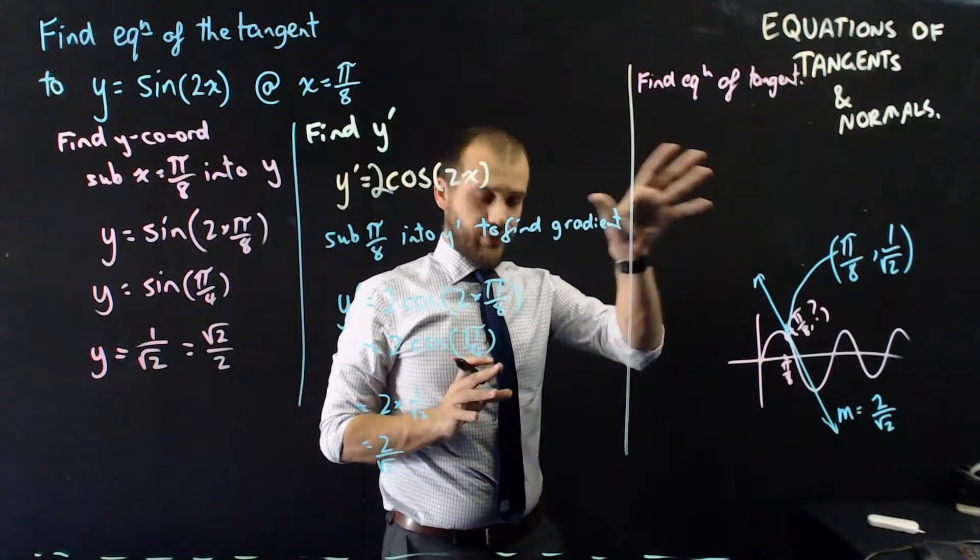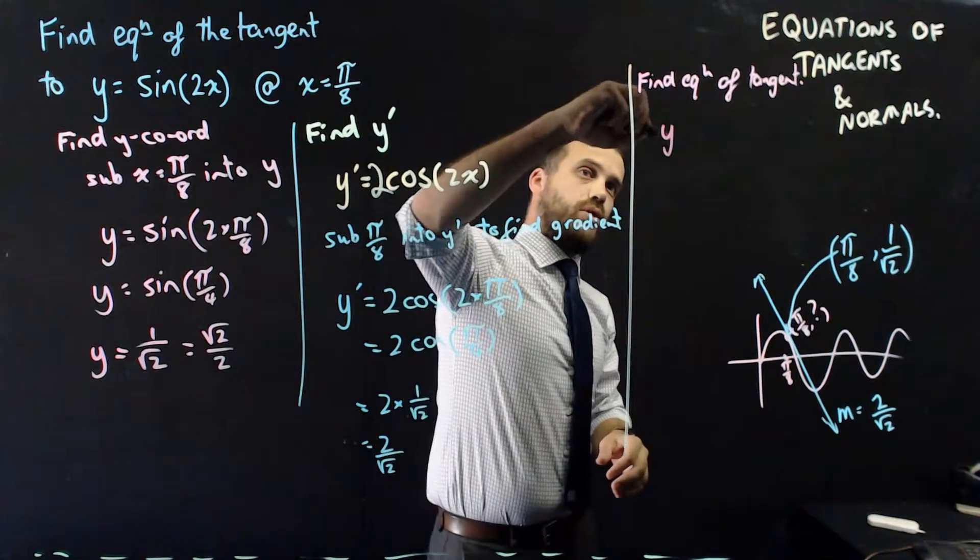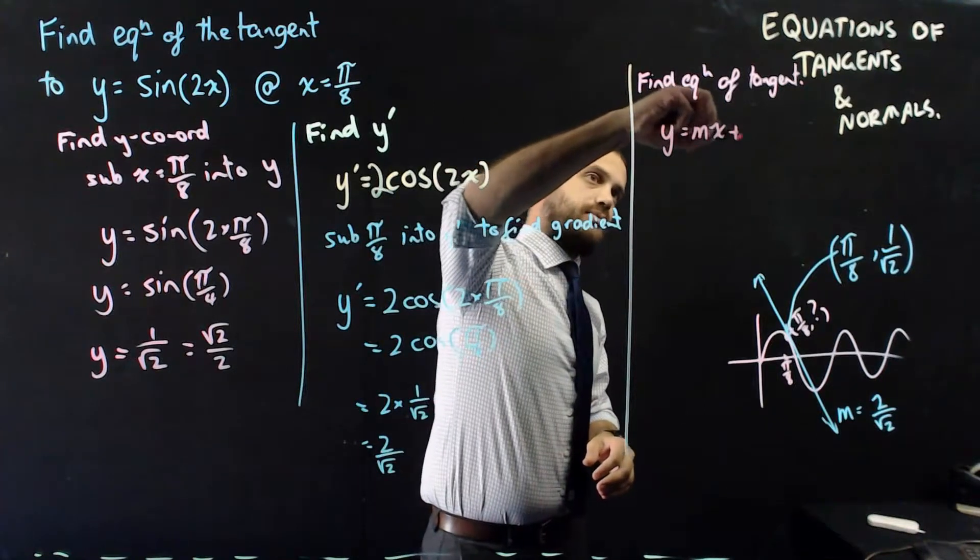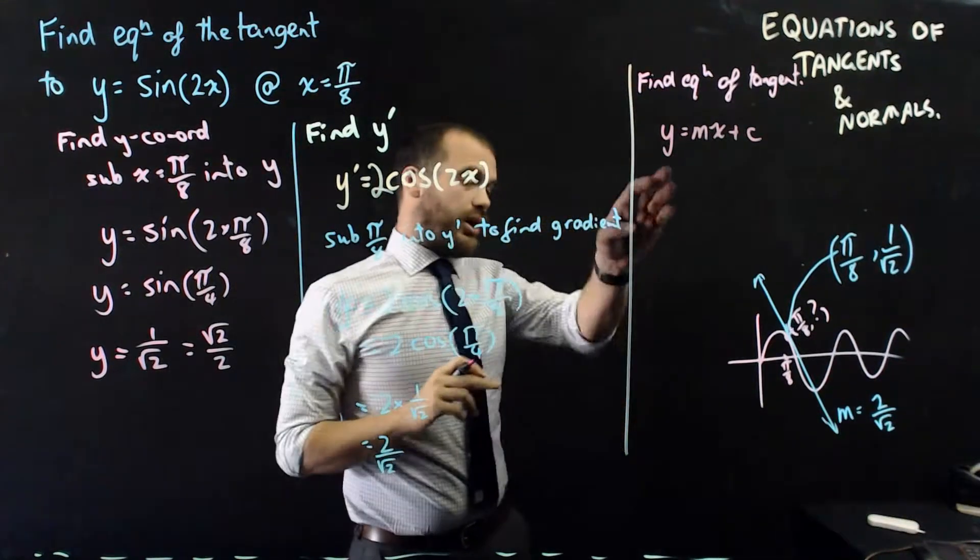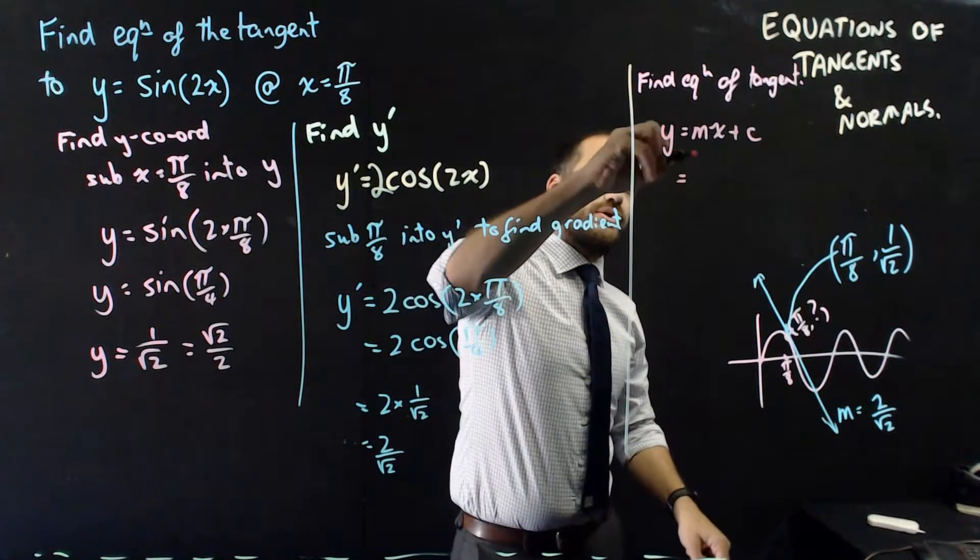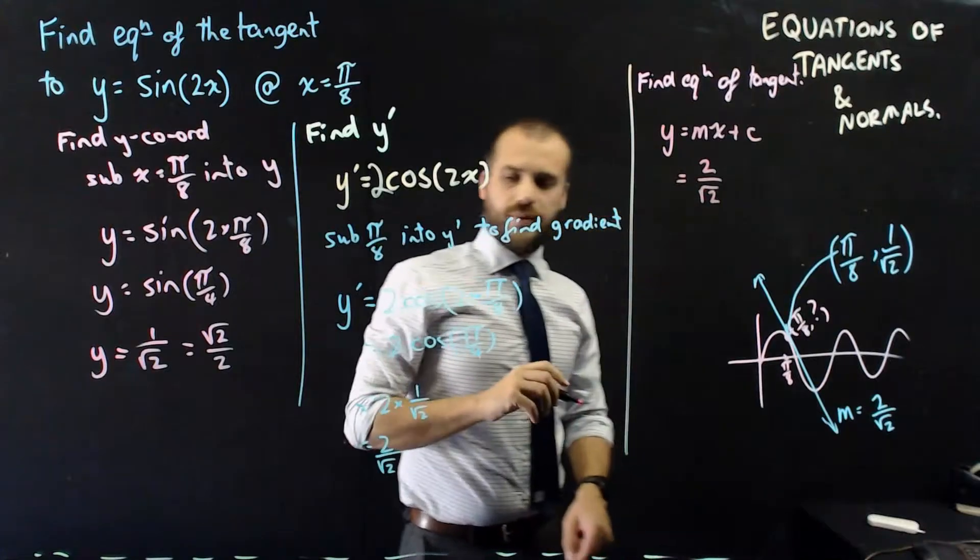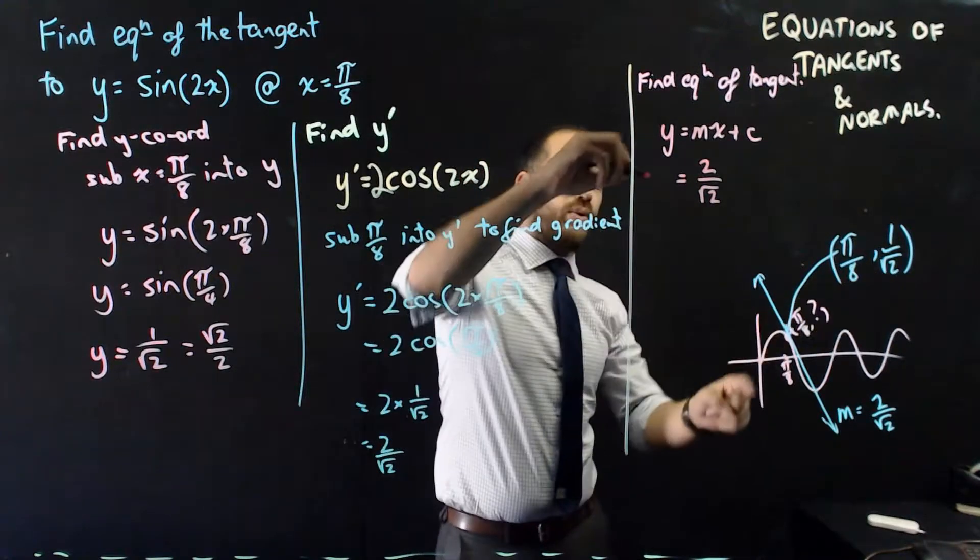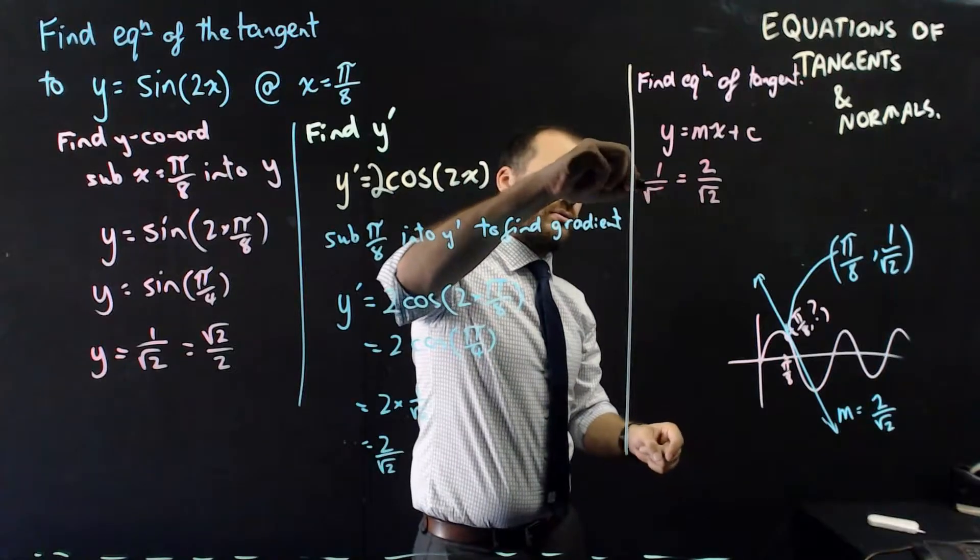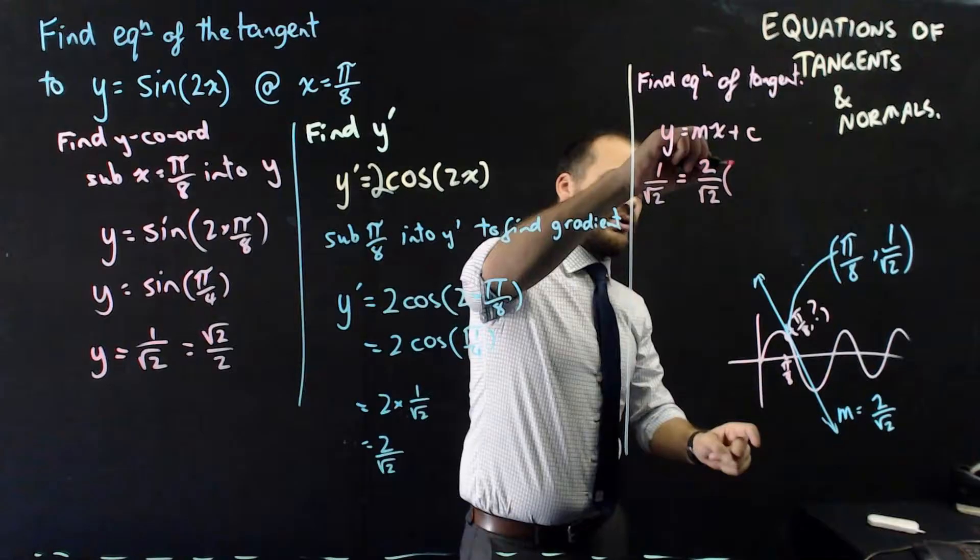Last step I need to find the equation of that tangent. So I'm going to find the equation of the tangent. The tangent is a straight line so it has a function y equals mx plus c. I know the gradient is 2 on root 2. So m is the gradient 2 on root 2. I know that the y coordinate is 1 on root 2. And I know that the x coordinate is π on 8.